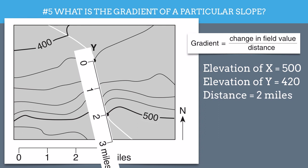So, distance equals 2 miles. Now it's simply a matter of plugging these numbers into the formula. So the gradient is going to equal the change in the elevation, which would be 500 feet minus 420 feet divided by the distance of 2 miles.